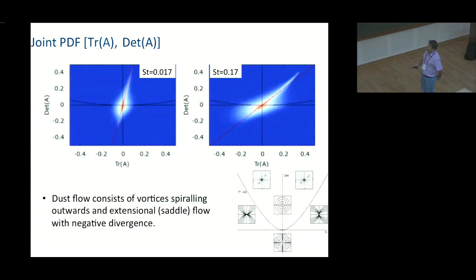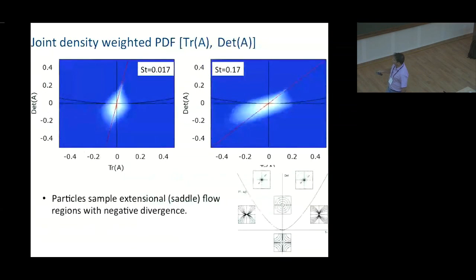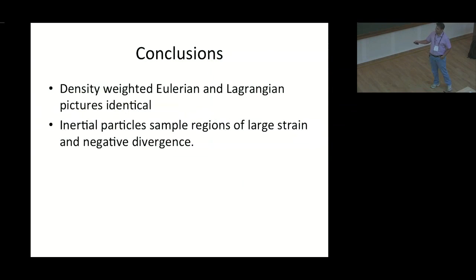However, I have now 32 seconds, so I'll just wrap up. The thing which is very interesting is that if you look at the joint PDF of the trace of the fluid velocity gradient and the determinant of the fluid velocity gradient, then you see a curve which looks like this. Remember these were the different quadrants. And now what you find is, one, that most of the regions are regions where fluid is a spiraling outward vortex. And then the second is the particles, because they are going to get concentrated in regions of strain but still with trace less than zero. Let me just end with that. Density-weighted Eulerian and Lagrangian pictures are very identical, and inertial particles not only sample regions of large strain, which is what is known, but also regions of negative divergences. So that I will stop.